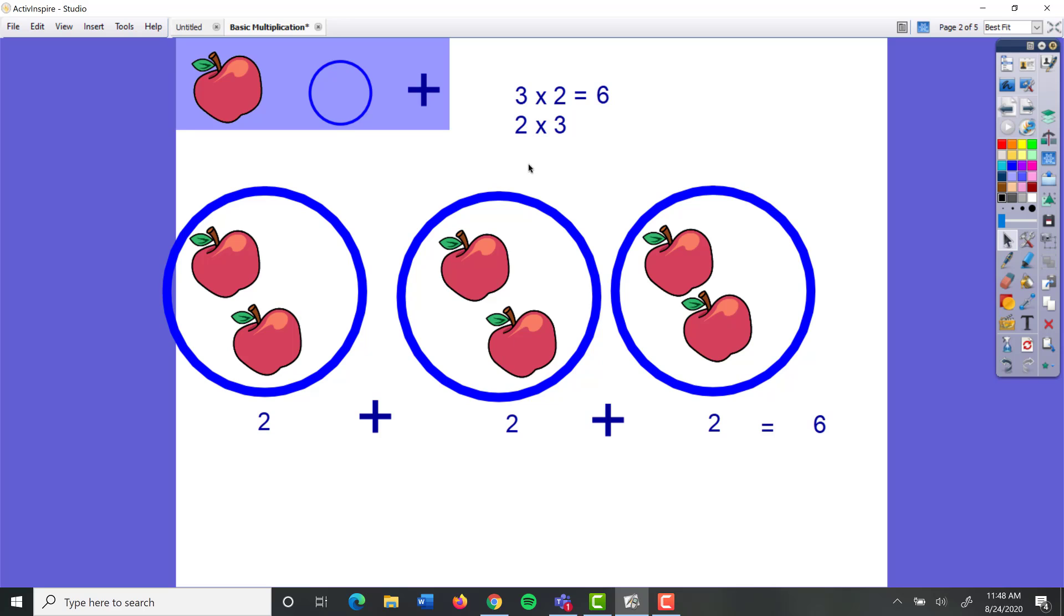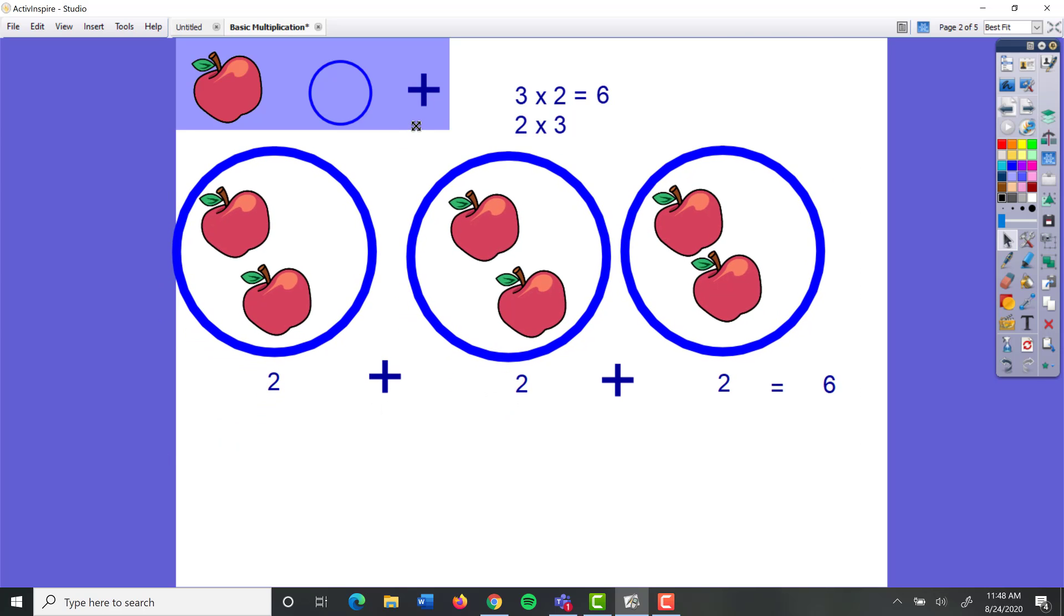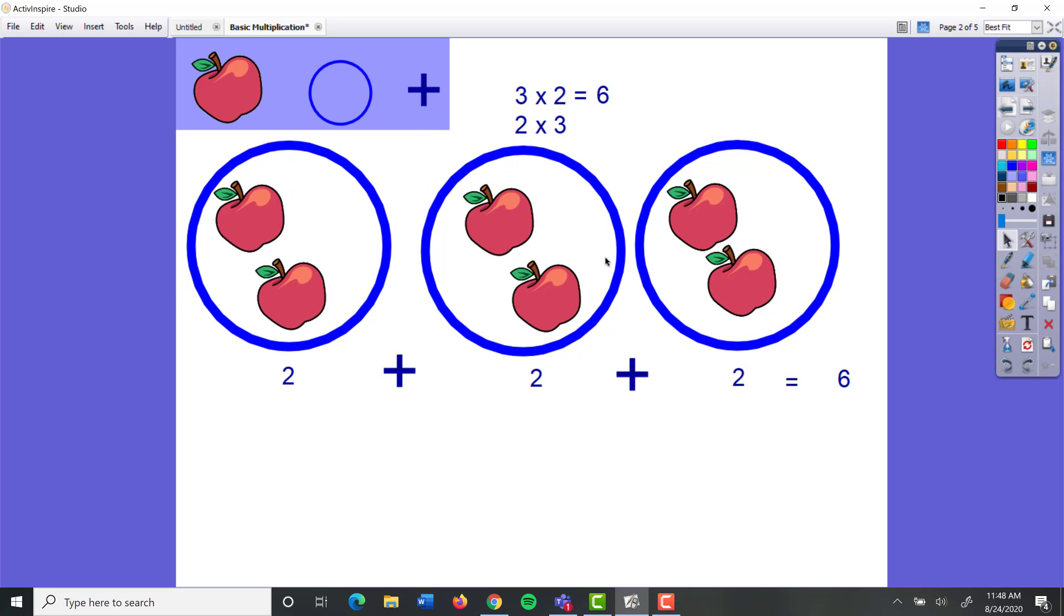Or you could even look at the other meaning of this, where it actually means that you gave me three apples two times. So let's look at that. So instead of giving me two apples three times, you give me three apples two times. There's the first time, and there's the second time.